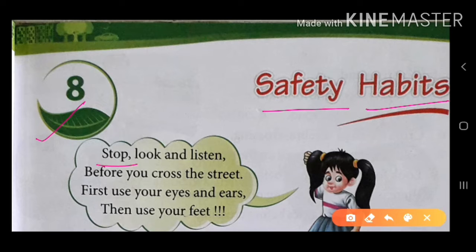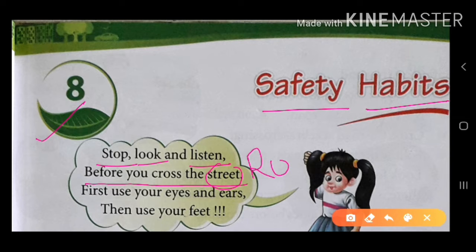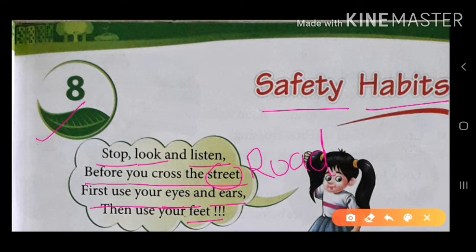Stop. Look. Listen. Before you cross the street. Street means road — R, O, A, D — road. Road को cross करने से पहले, first use your eyes and ears. पहले आपको eyes and ears यूज़ करना है. Then use your feet.